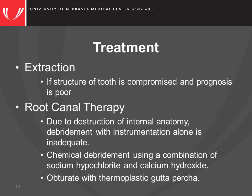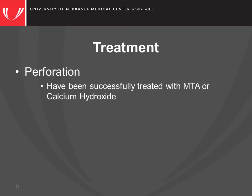Debridement with chemical means such as sodium hypochlorite and calcium hydroxide is often necessary. Obturation is usually accomplished with thermoplastic gutta-percha. In the case of root perforation, some cases have been successfully treated with MTA or calcium hydroxide.